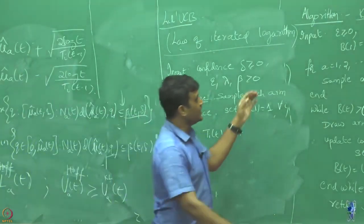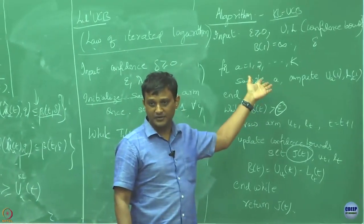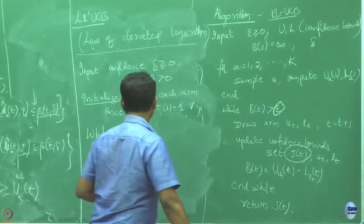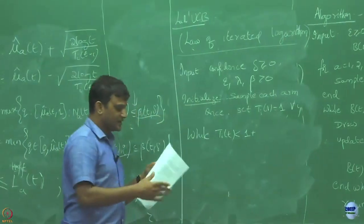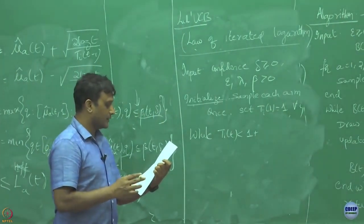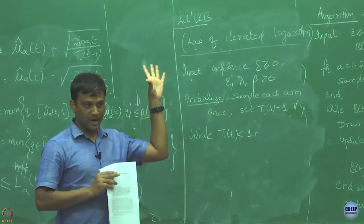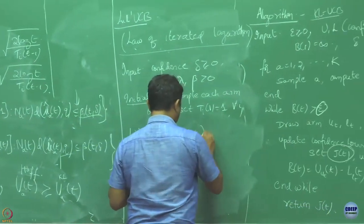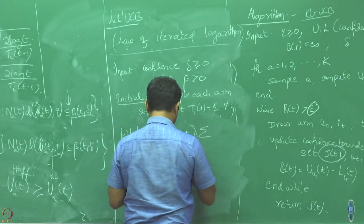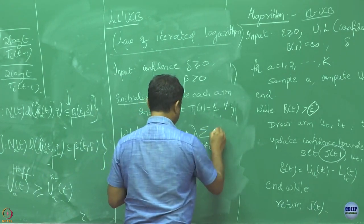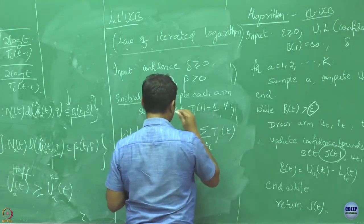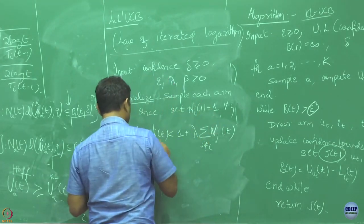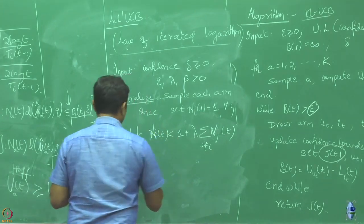The way I defined this scale UCB algorithm it is trying to identify the top M arms but you can just set M to be equals to 1, in that case it is trying to just identify the best arm. This algorithm I am writing here, it is just trying to identify the best arm, not the top M arms, its focus is to identify just the best arm.